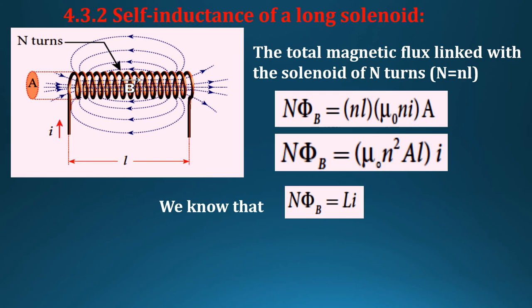We know that N phi_B is equal to L I. So N phi_B equals mu_0 n^2 A l into I, so L could be written as mu_0 n^2 A l.